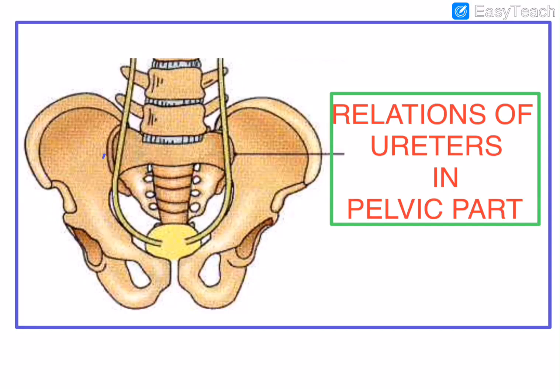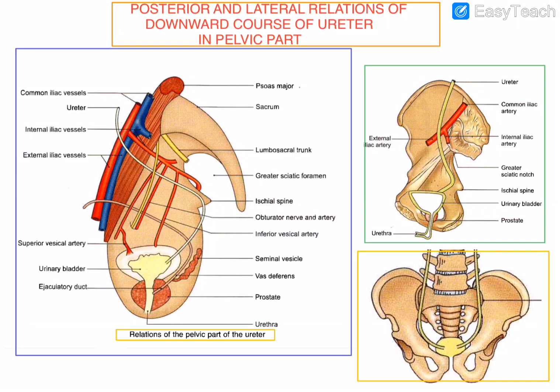In this session we are going to discuss the relations of the ureters in the pelvic part. Based on the course of ureters in the pelvic part, we know they have two courses: one is the downward course and the forward course. Firstly, we will see the relations of the downward course, which has two relations: posterior relations and lateral relations.